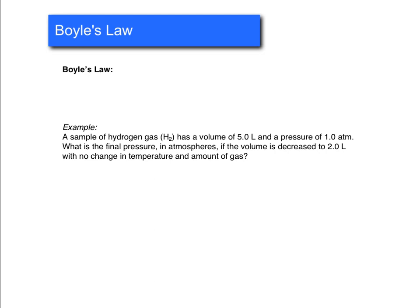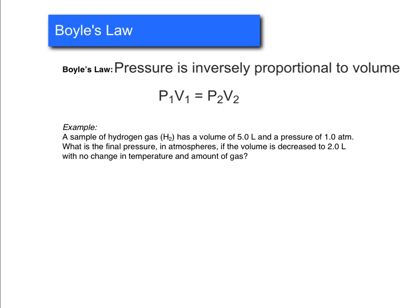So the first one we're going to talk about is Boyle's Law. And Boyle's Law is the relationship between pressure and volume. And these things are inversely related, which means that as one goes up, the other one is going to go down. And the equation that is associated with Boyle's Law is P1V1 equals P2V2. Okay, so the example we have here is a sample of hydrogen gas has a volume of 5.0 liters and a pressure of 1.0 atmospheres. So you know right away that since you're given volume and pressure that this must be a Boyle's Law problem.